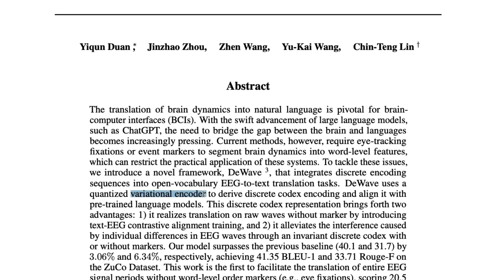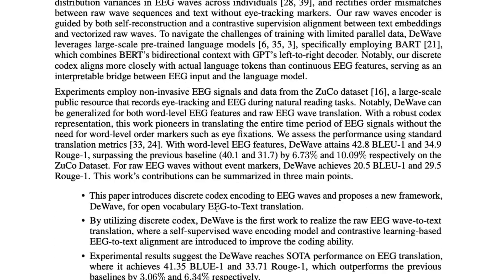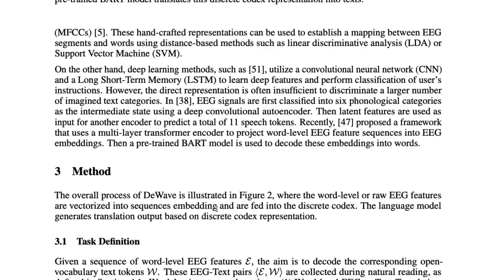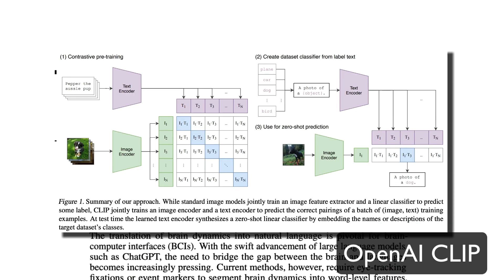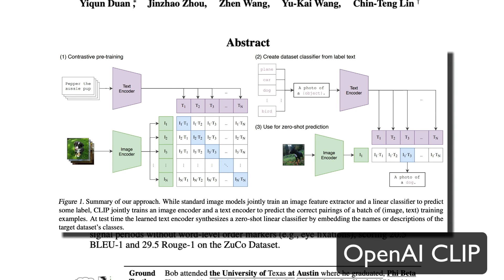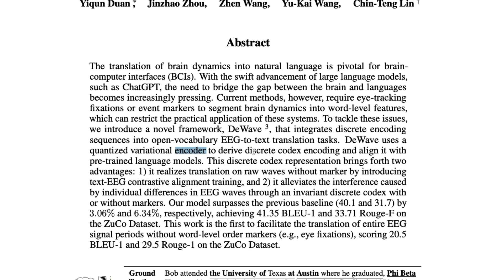D-Wave uses a Quantized Variational Encoder — if this name sounds familiar, variational auto-encoders are something that stable diffusion kind of models have been using. When I show you the architecture, you can closely relate this to stable diffusion or how stable diffusion models have been trained. They are using a quantized variational encoder to derive discrete codex encodings.